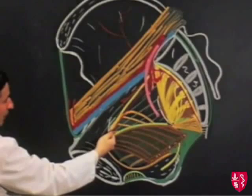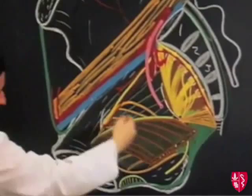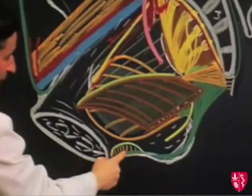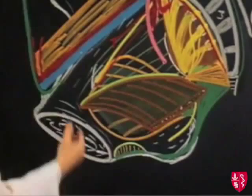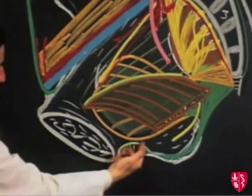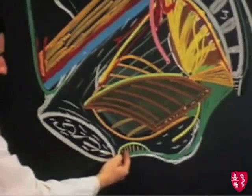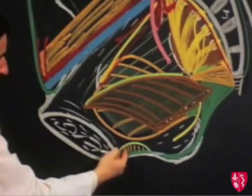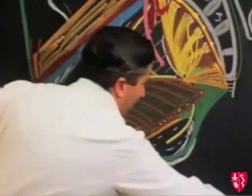Down here in the perineum is the urogenital diaphragm, which must be distinguished from the pelvic diaphragm. The pelvic diaphragm consists of the levator ani and the coccygeus. The urogenital diaphragm consists of the perineal membrane below and parietal pelvic fascia above, with the space between these two membranes filled by muscle — known as the deep perineal pouch.